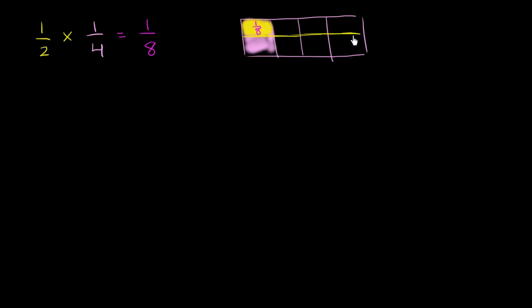And it hopefully makes sense that you get this 8 by multiplying 2 times 4. You started with four equal sections, but then you divided each of those four equal sections into two equal sections, so you have eight total equal sections.